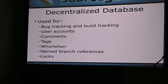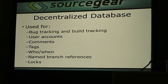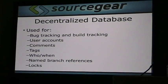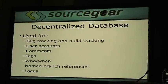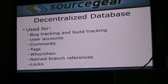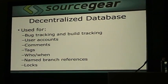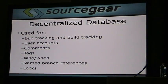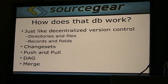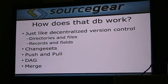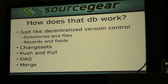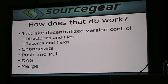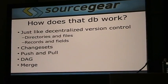Veracity also has what we call a decentralized database, and this is the thing we used to build the features I just showed you — bug tracking, build tracking, user accounts. It's also used for comments, tags, who and when to commit, named branch references, and blobs. Basically all the metadata of a version control system. Veracity stores all of that in a database, which is decentralized in the same way that tree things are decentralized under regular version control. Veracity has the same capability as Mercurial and Git for versioning trees, versioning records and files, but we also have this other capability to version things that are more like records and fields.